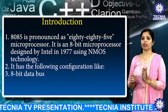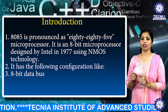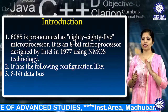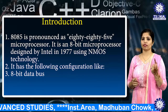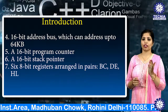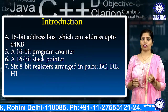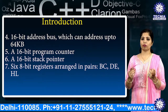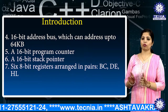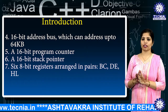The 8085 microprocessor is an 8-bit microprocessor designed by Intel in 1977 using NMOS technology. It has the following configuration: an 8-bit data bus, a 16-bit address bus which can address up to 64 KB, a 16-bit program counter, a 16-bit stack pointer, and 6 8-bit registers arranged in pairs like BC, DE, and HL. It requires a +5V supply to operate at a 3.2 MHz single-phase clock.